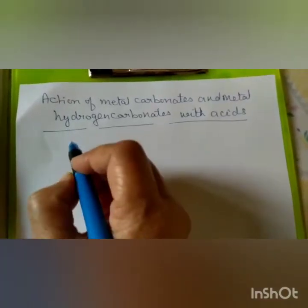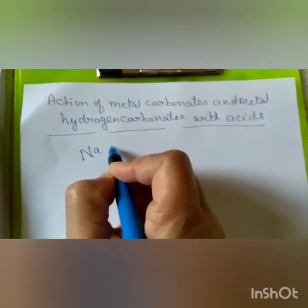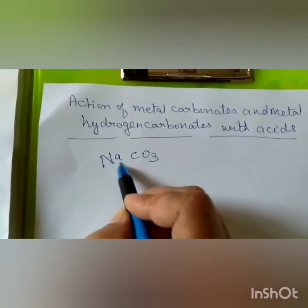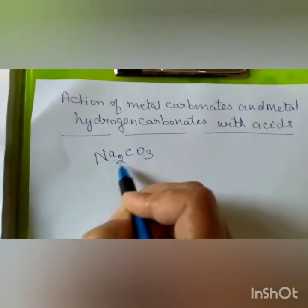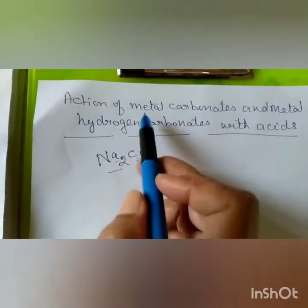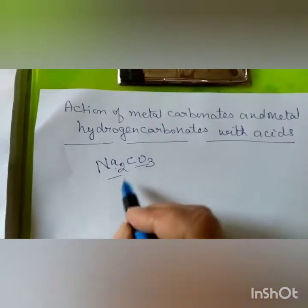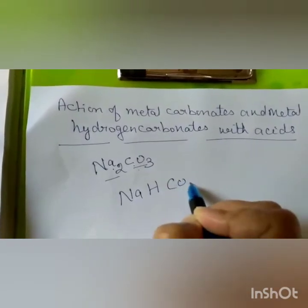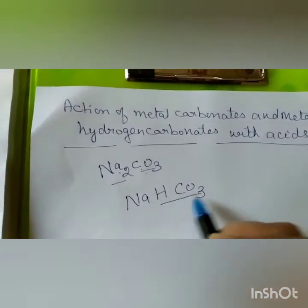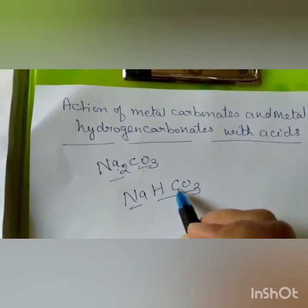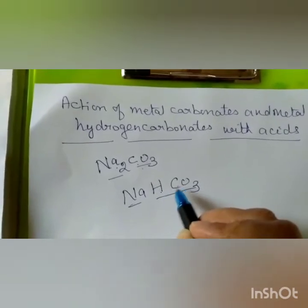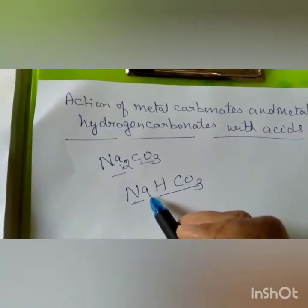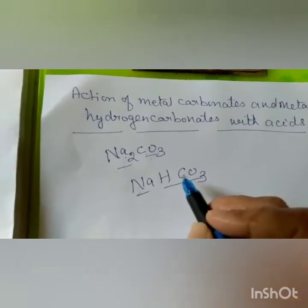What is metal carbonate? Sodium is the metal; CO₃ is carbonate. Sodium's valency is 1 and carbonate's valency is 2, so the formula is Na₂CO₃ — sodium carbonate. What is metal hydrogen carbonate? Sodium is the metal, this is hydrogen, this is carbonate. Hydrogen carbonate is also called bicarbonate; its valency is minus 1 and sodium is plus 1, so they cancel each other and we get NaHCO₃ — sodium bicarbonate or sodium hydrogen carbonate.